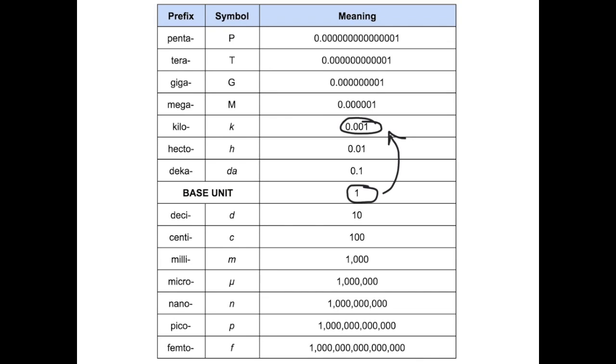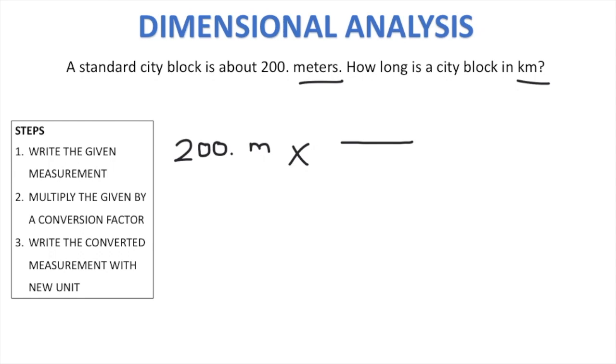When we set up our fraction, we want the given unit to cancel. So it needs to be on the opposite side of the fraction compared to the given. The given is by itself, but that's the same thing as just being over one. So the given is always on top of a fraction. That means in our fraction, we want the given unit to be on the bottom and then the new unit will be on the top. So it becomes 0.001 kilometers over one meter. We just got those numbers right from our chart.